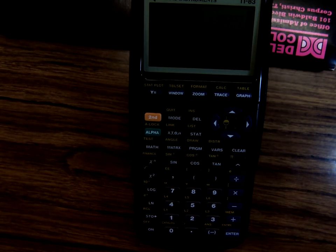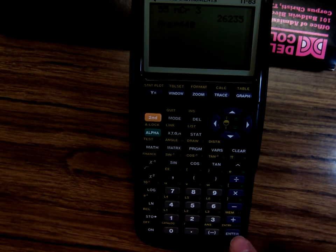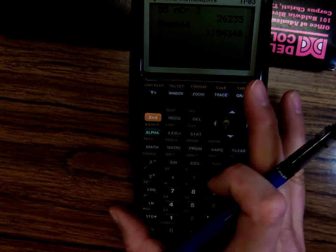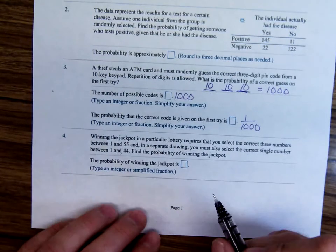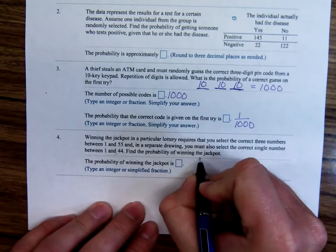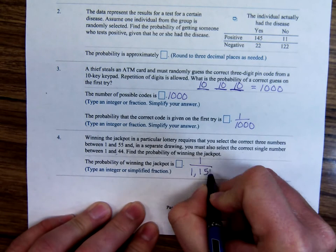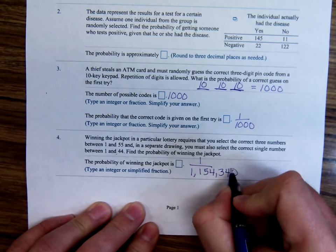And then times 44. So that's how many possible outcomes there are. The probability of winning would be 1 over 1,154,340.